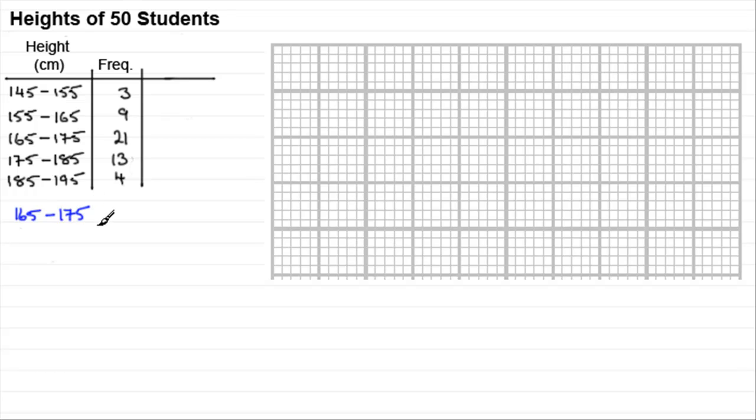What does that mean? Well, it's equivalent to saying that the height, let's call it h, is greater than the lower bound, which is the 165, but less than or equal to the upper bound of 175.